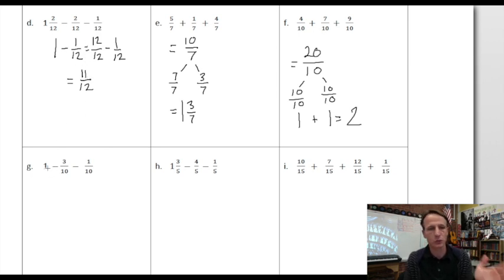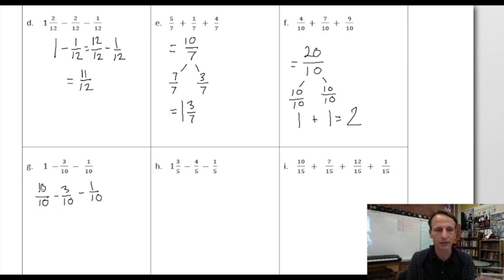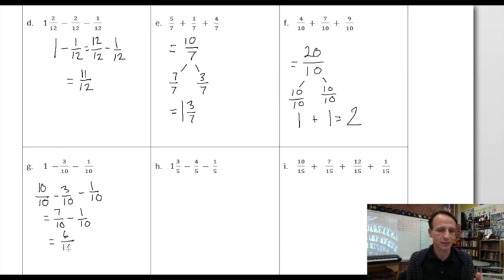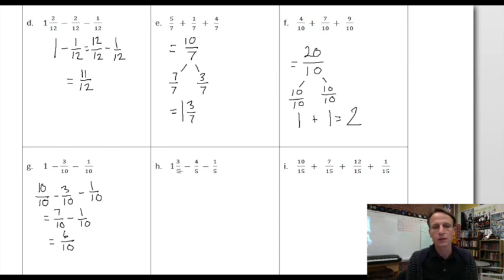Now here's one whole minus three tenths. One whole equals ten tenths, so we rewrite it: ten tenths minus three tenths equals seven tenths. Then we subtract one tenth from that, and what's left? Six tenths. We could simplify — they have two as their greatest common factor — but we're not going to.